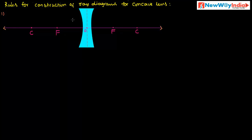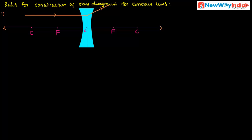Consider a ray of light incident on the concave lens. After passing through the concave lens, it will diverge out. This is the first rule. If you extend this line backward, it will diverge from the principal focus.